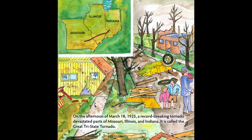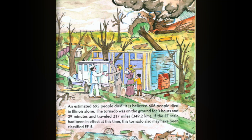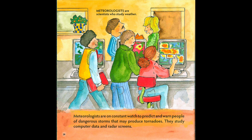On the afternoon of March 18th, 1925, a record-breaking tornado devastated parts of Missouri, Illinois, and Indiana. It is called the Great Tri-State Tornado. An estimated 695 people died — it is believed 606 people died in Illinois alone. The tornado was on the ground for three hours and 29 minutes and traveled 217 miles (349.2 kilometers). If the EF scale had been in effect at this time, this tornado also may have been classified EF5.